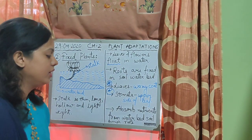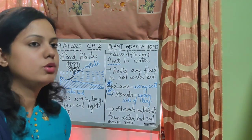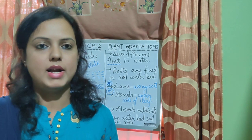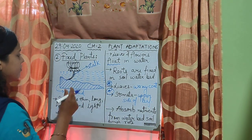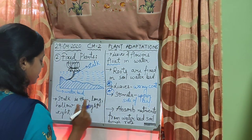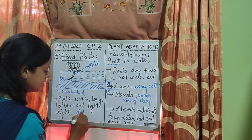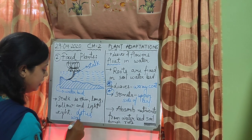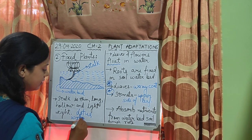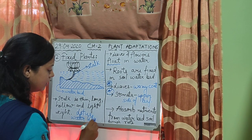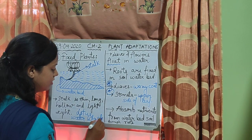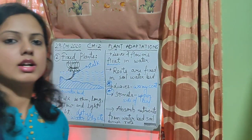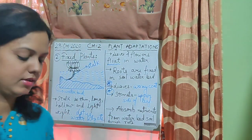They absorb nutrients through roots from the soil of the water bed. Examples of fixed plants: lotus, kamal ka phool, and water lily.